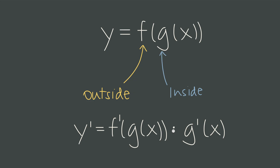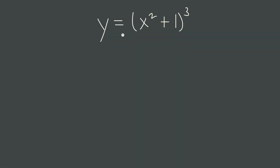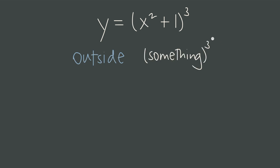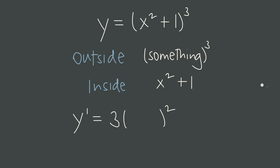The general idea is that we have a pipeline of rates where tiny changes flow from one function to the next. Practically speaking, that means if we have something like y equal to x squared plus 1, quantity cubed, we recognize that the outside function is the cubed part — we can think about that as something cubed — and the inside function is x squared plus 1. Our derivative rule is: derivative of the outside, keep the inside, then multiply by the derivative of the inside.